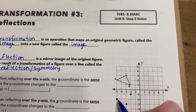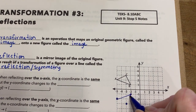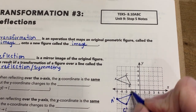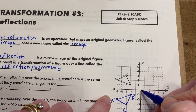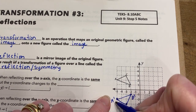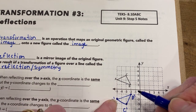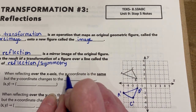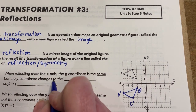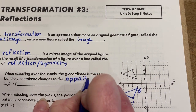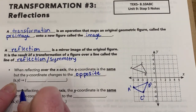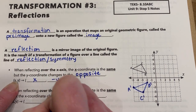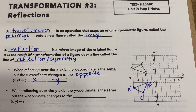So when reflecting over the x-axis, we get A prime, C prime, and B prime. The x-coordinate stays the same — for example, it's still negative five for both. What changed was the y-coordinate: positive two becomes negative two. That's true any time you reflect over the x-axis — the x coordinate stays the same, and the y coordinate changes to the opposite. We write this as the rule: (x, y) → (x, −y).